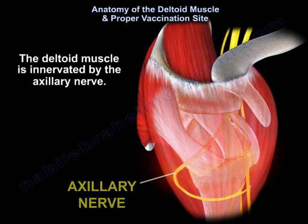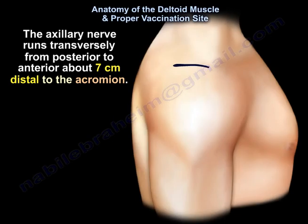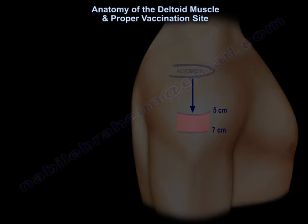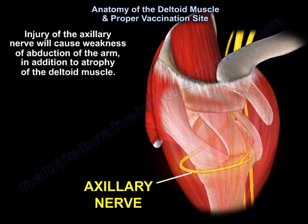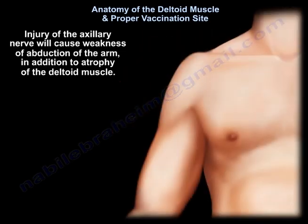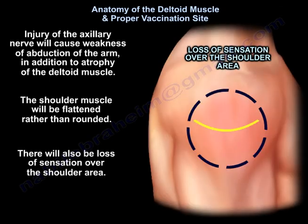The deltoid muscle is innervated by the axillary nerve, which runs transversely from posterior to anterior about 7 cm distal to the acromion. The injection site should not exceed 5 cm distal to the acromion, because this is the danger zone and the axillary nerve can be injured. Injury of the axillary nerve will cause weakness of abduction of the arm, atrophy of the deltoid muscle, flattening of the shoulder, and loss of sensation over the shoulder area.